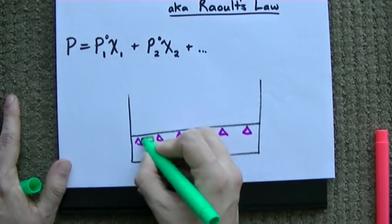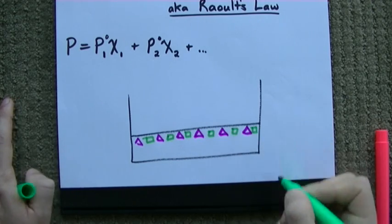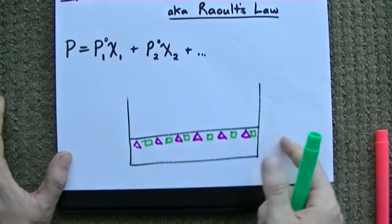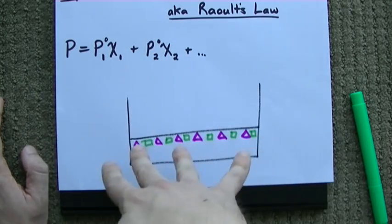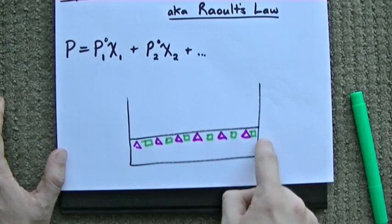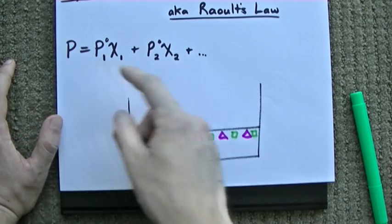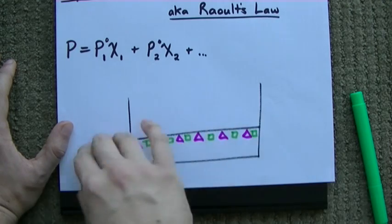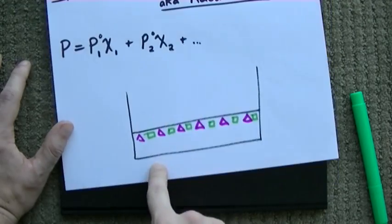But, if you mix green squares in there, green squares or chloroform, then the purple triangles have less opportunities to escape because half of the surface area of the surface of your solution is taken up by another kind of molecule. So, if it's exactly half and half, moles and moles, then the total vapor pressure is going to be half caused by purple triangles because they're half of the solution surface area. And, it's going to be half green squares because they're half the surface area.